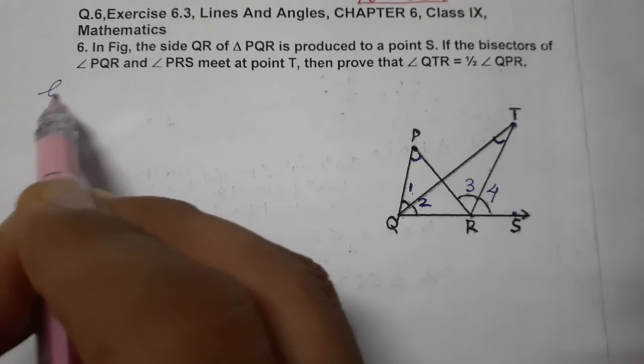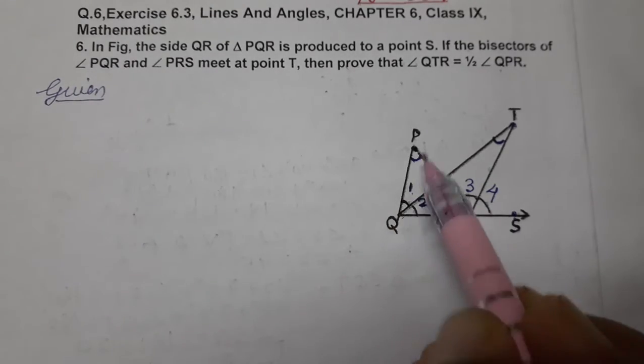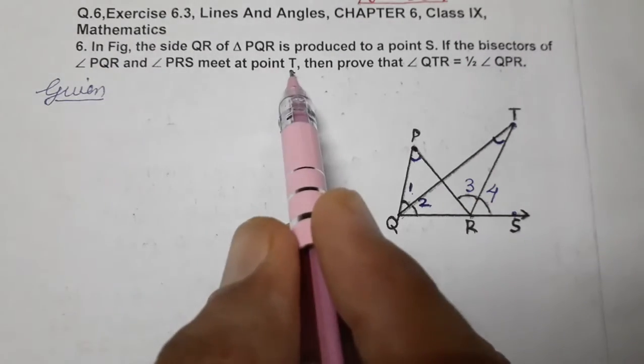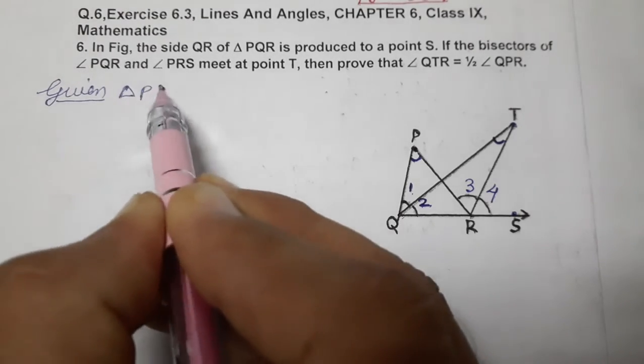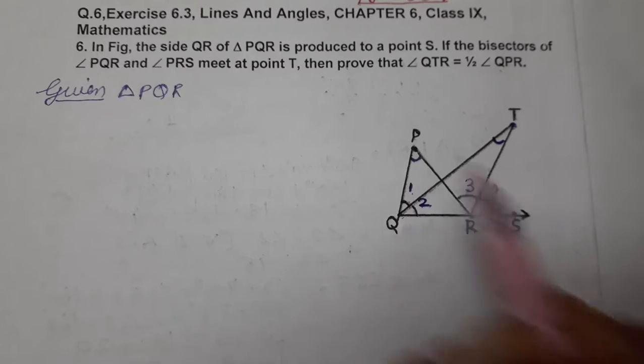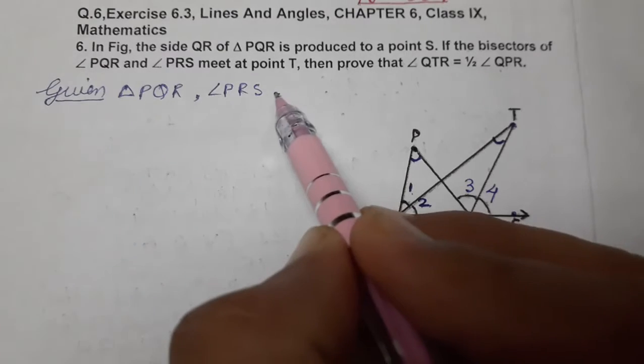Given: first of all let's start with given. Bisectors of angle PQR and angle PRS meet at point T. Given triangle PQR, PRS is an exterior angle.